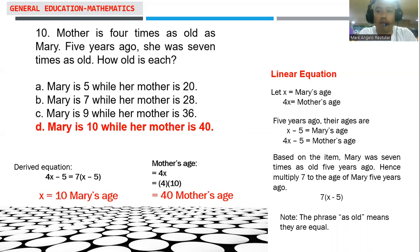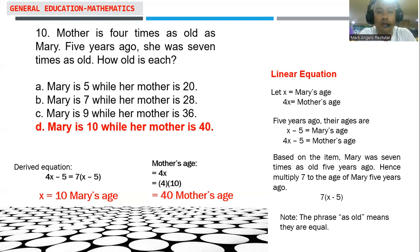To answer, we let x be the age of Mary. Since mother is 4 times as old as Mary, the mother's age is 4x. Five years ago, Mary's age was x minus 5, and mother's age was 4x minus 5. Since the mother was 7 times as old as Mary 5 years ago, we write: 4x minus 5 equals 7 times (x minus 5).